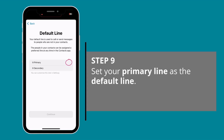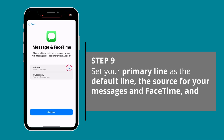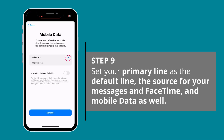Set your primary line as the default line, the source for your messages and FaceTime, and mobile data as well. You can adjust this in your phone settings before your flight.